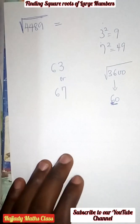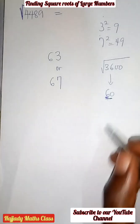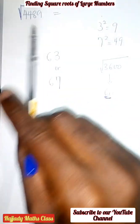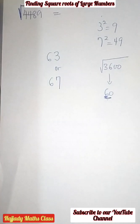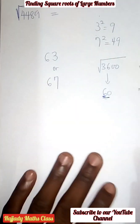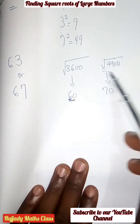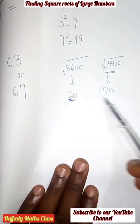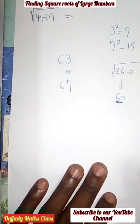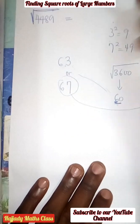The question is: which one do we pick, sixty-three or sixty-seven? We ask ourselves: is four thousand four hundred and eighty-nine closer to three thousand six hundred or to four thousand nine hundred? It is clearly closer to four thousand nine hundred. So we pick the value closer to seventy, which is sixty-seven. Therefore, our answer is sixty-seven.